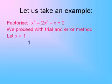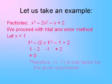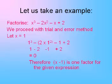Then that becomes 1 cubed minus 2 into 1 squared minus 1 plus 2. So here plus 1 minus 1 minus 2 plus 2 gets cancelled and we get 0 as the remainder. That means x minus 1 is one of the factors of the given expression.